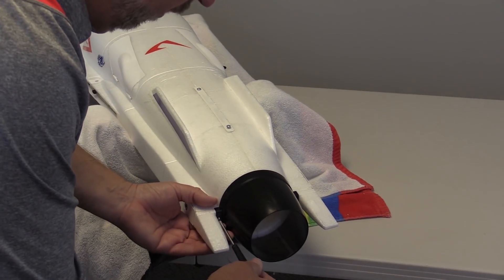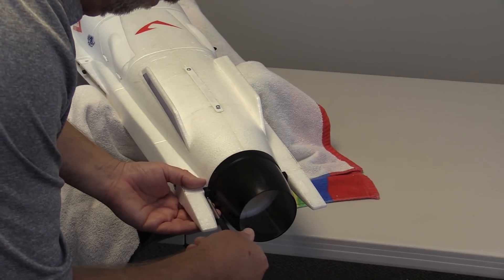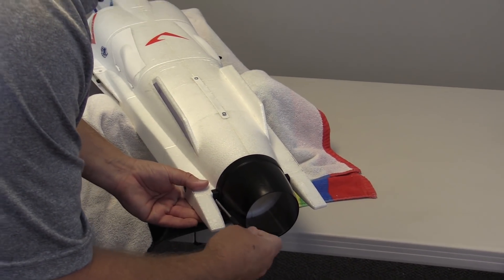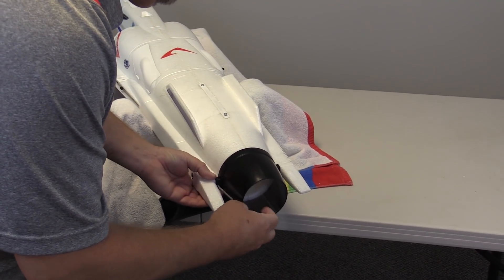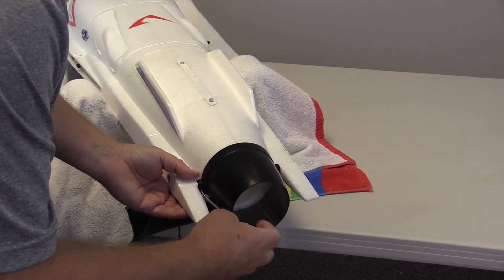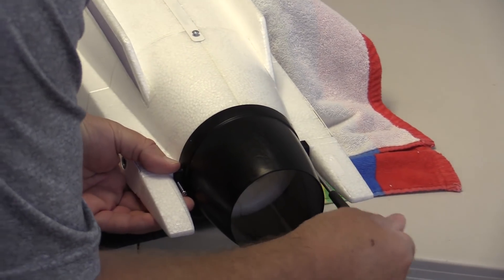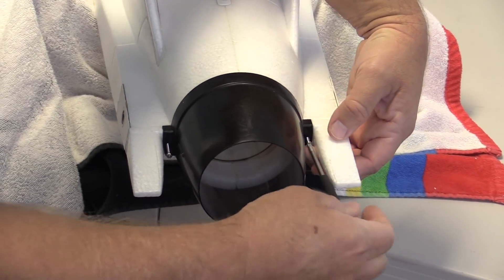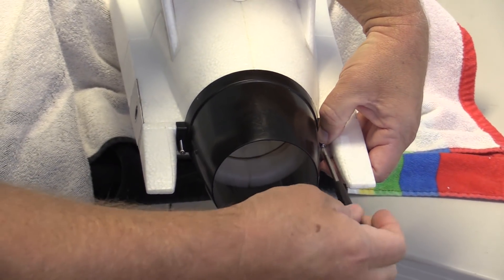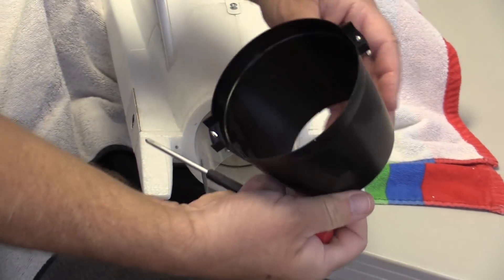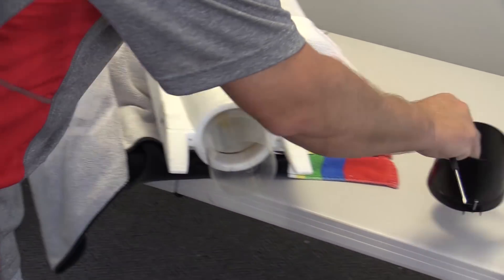Alright, first thing we're going to do is remove the nozzle from the back of the model. It has two Phillips screws. We're just going to use a Phillips screwdriver. They're a little bit long so just back them well out. You can leave them in the plastic. Now just pull off the back and leave the screws in place and we'll set that aside.